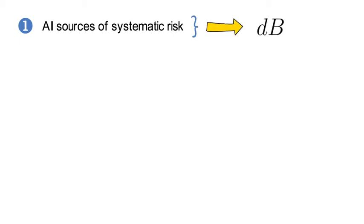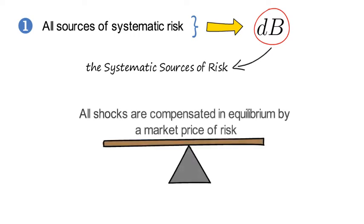Now first, all sources of systematic risk must be part of dB. Hence, not surprisingly, we call dB to be the systematic sources of risk. So all these shocks in dB are compensated in equilibrium by a market price of risk.